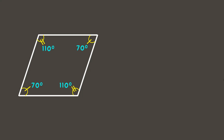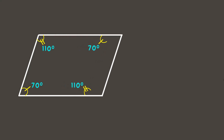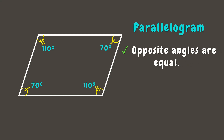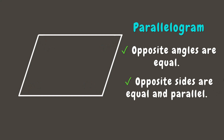Then let's go to the next one. This time let's try to stretch this rhombus — like this. Now this is a parallelogram. A parallelogram, like a rhombus, has equal opposite angles, and its opposite sides are equal and parallel.